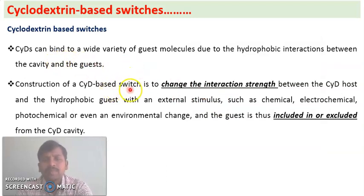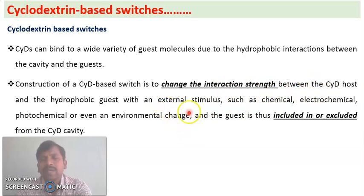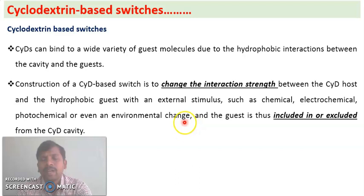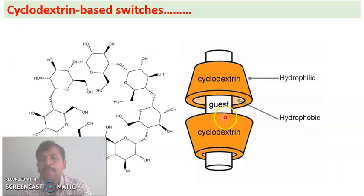We can construct cyclodextrin-based switches by changing the interaction strength between the cyclodextrin and the hydrophobic guest by applying an external stimulus. The external stimulus may be a change of chemical environment, electrochemical environment, photochemical environment, or even a pH change — acidic or basic environment.